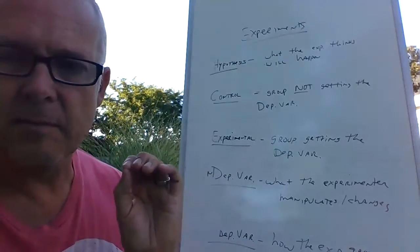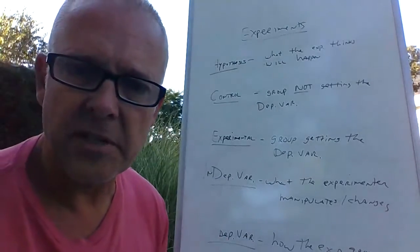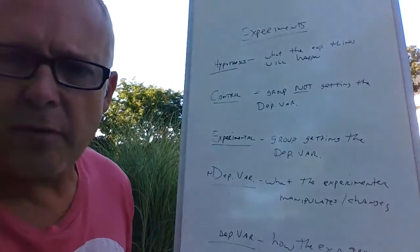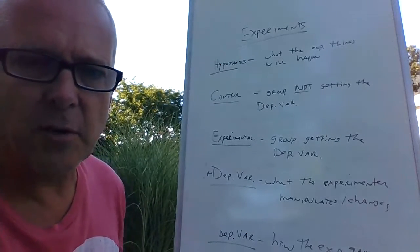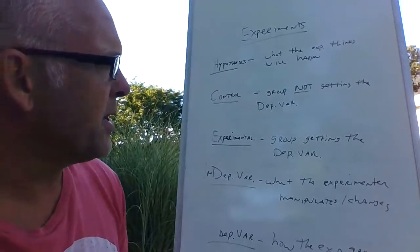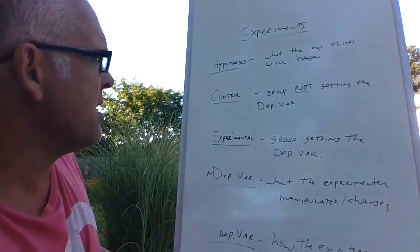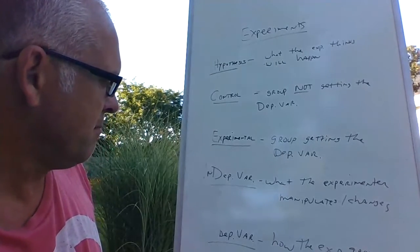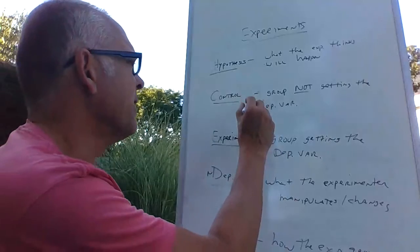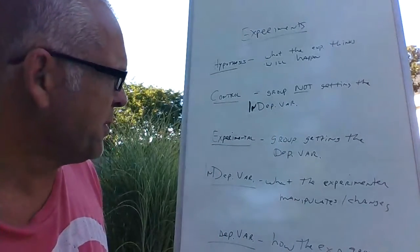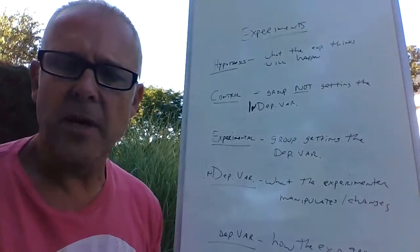So you need two different groups to study. You have what is called the control group, and your definition, this will be the group that does not get the independent variable. So this would be, let's say you got wing A and wing B.